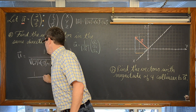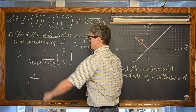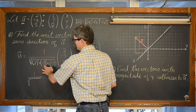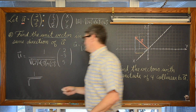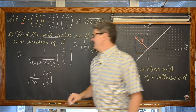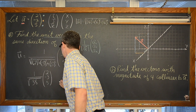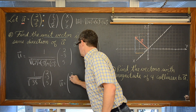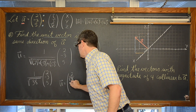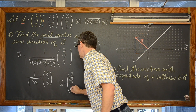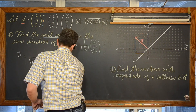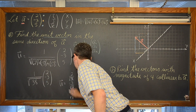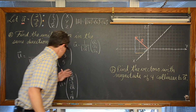This comes out to be 1 over the square root of — 2 squared is 4, negative 3 squared is 9, 4 plus 9 is 13, and 13 plus 25 makes 38. So our unit vector is going to be 2 over the square root of 38, negative 3 over the square root of 38, and 5 over the square root of 38. I am not going to rationalize these denominators. That is the unit vector.